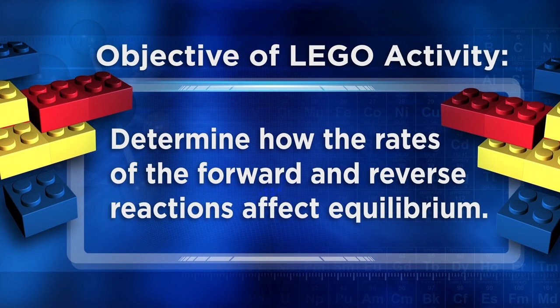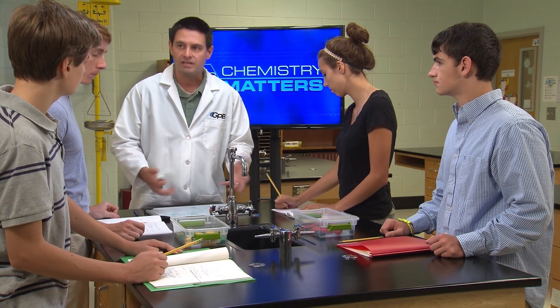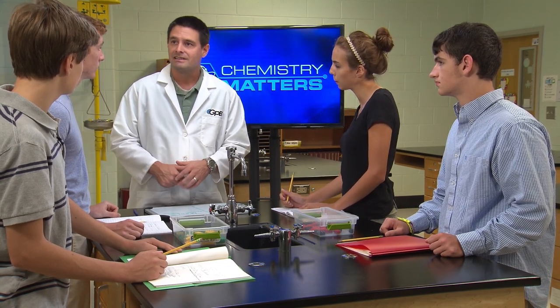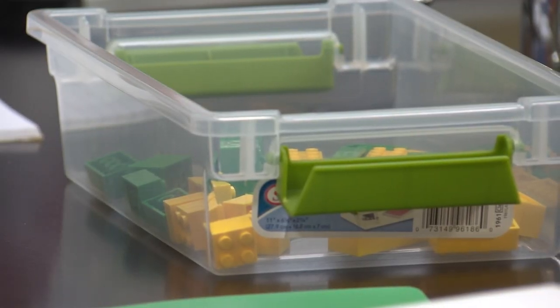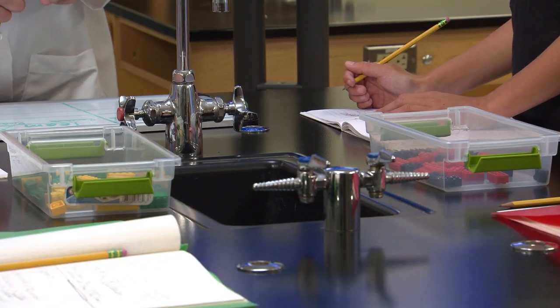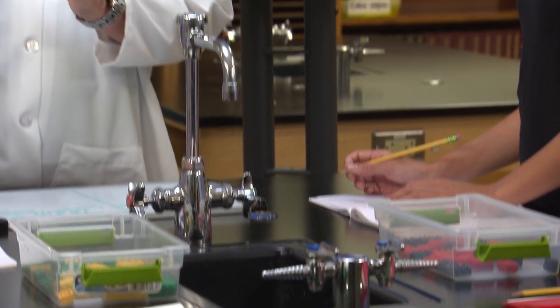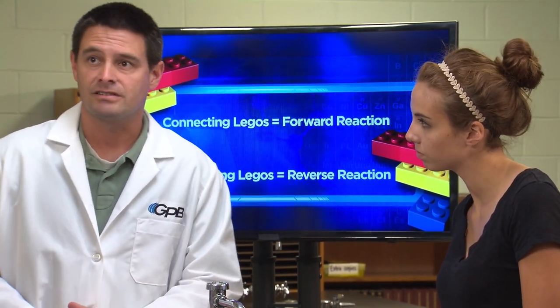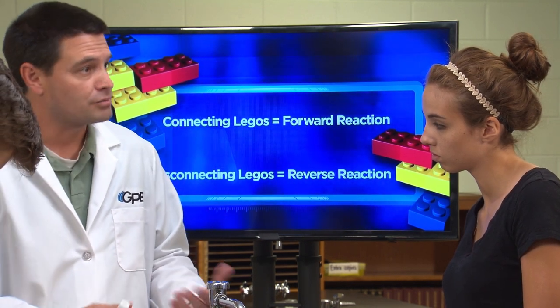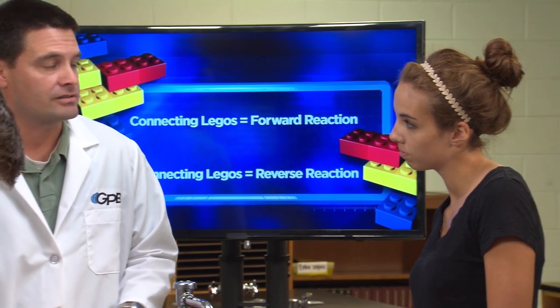So let's pair up for a brief activity to help us visualize equilibrium. Both teams have a box containing two colors of Legos, and the objective is to determine how the relative rates of the forward and reverse reactions affect equilibrium. We'll monitor the change in the number of reactants and products over time. Each individual Lego piece represents a chemical reactant, and each connected Lego piece represents a product. When I start the timer, one person in each group will reach into the box without looking and remove two Lego pieces. If the two pieces are different colors and unconnected, connect the two Legos to form a product, then return it to the box. If the two pieces are the same color or one is already a connected product, return them immediately without changing them.